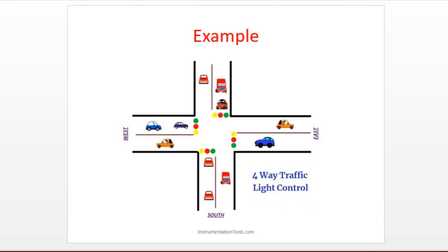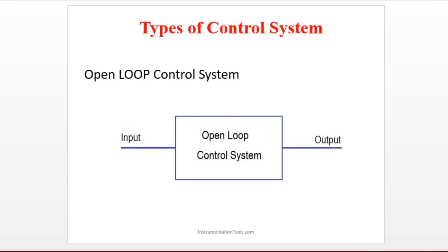First, east direction vehicles go, there will be a free left, and there will be time for people to cross the road. After that, south direction vehicles can move. Like that, at one time only one side is allowed. We can write a logic to make a simple control system.